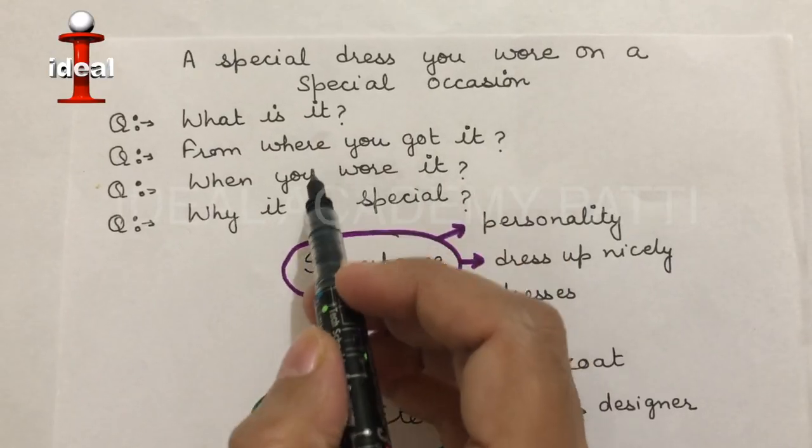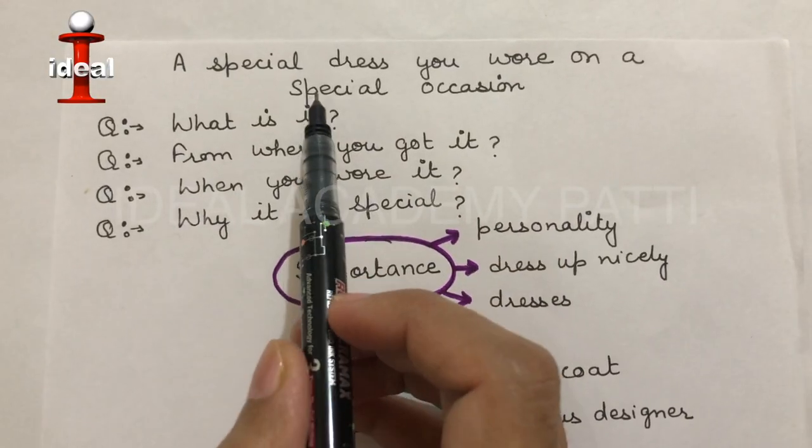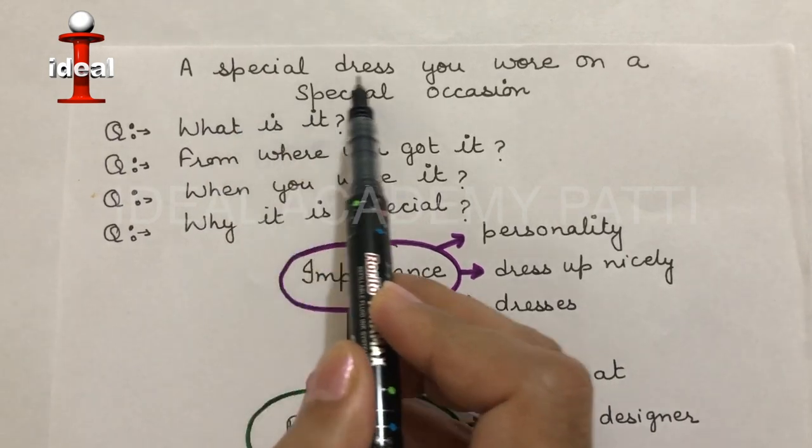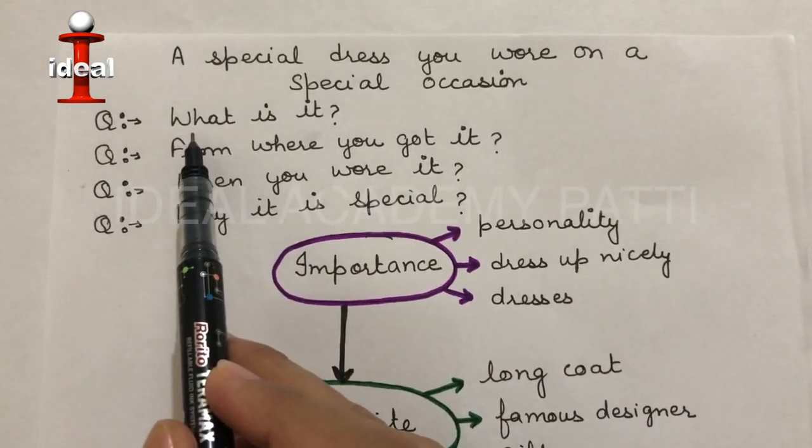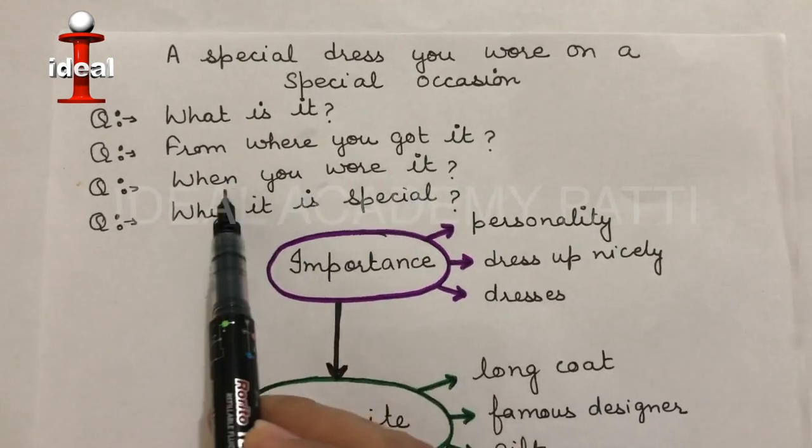On the request of some students, now I am going to prepare an important IELTS topic: a special dress you wore on some special occasion. The questions in this topic are: What is it? From where you got it? When you wore it? And why it is special?